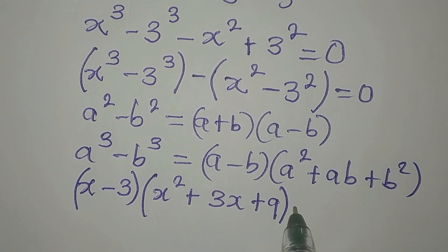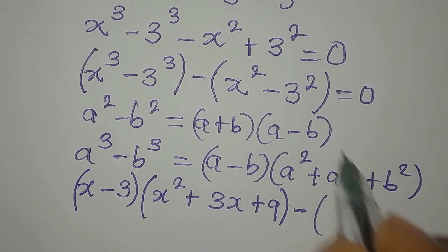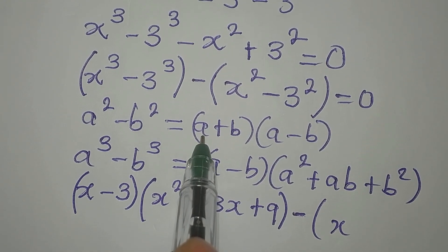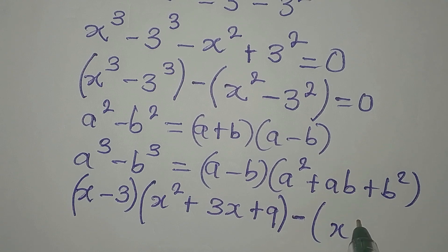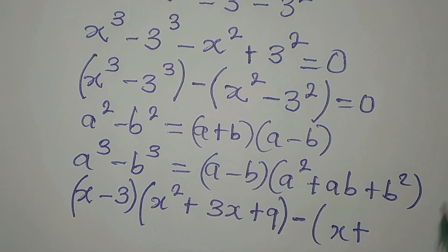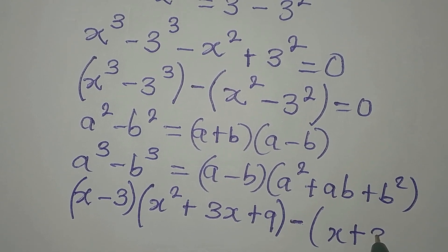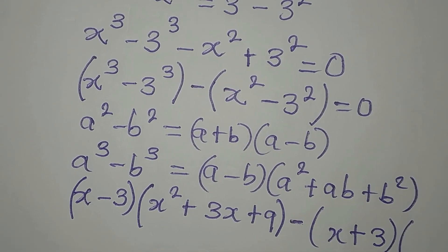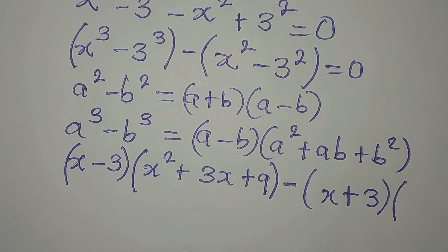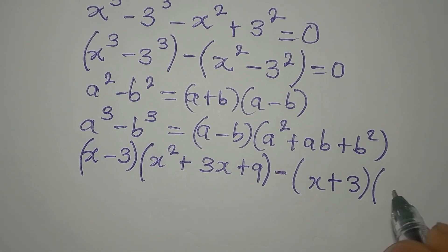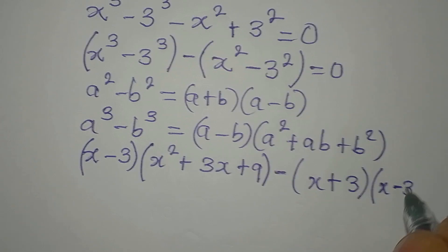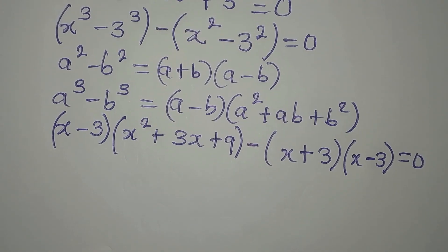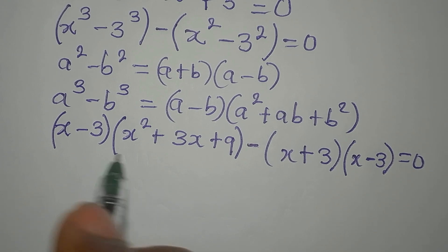For the difference of two squares part, a plus b gives us (x + 3) and a minus b gives us (x − 3), so we have (x + 3)(x − 3). This is now equal to 0.